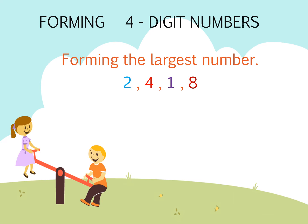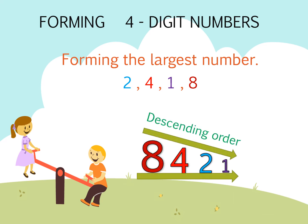When we have to form the greatest number with the given digits, we arrange the digits in descending order like this. Here 8 is greater than 4, 4 is greater than 2, and 2 is greater than 1, so we say that these digits are arranged in descending order.